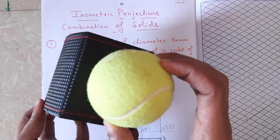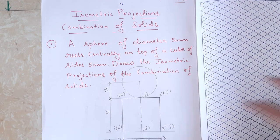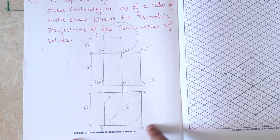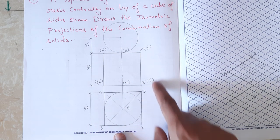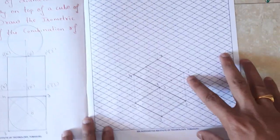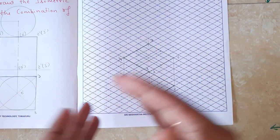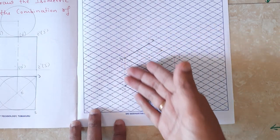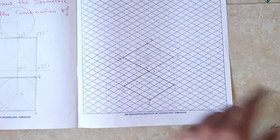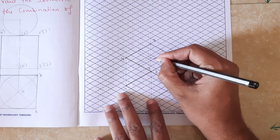For that, first we have to draw the top view and the corresponding front view. Then we draw the isometric projection of the cube — the top face is a square, the bottom face is also a square, all six faces are squares. This is how we draw the isometric projection of a cube. After that, we have to locate the center of the top face.